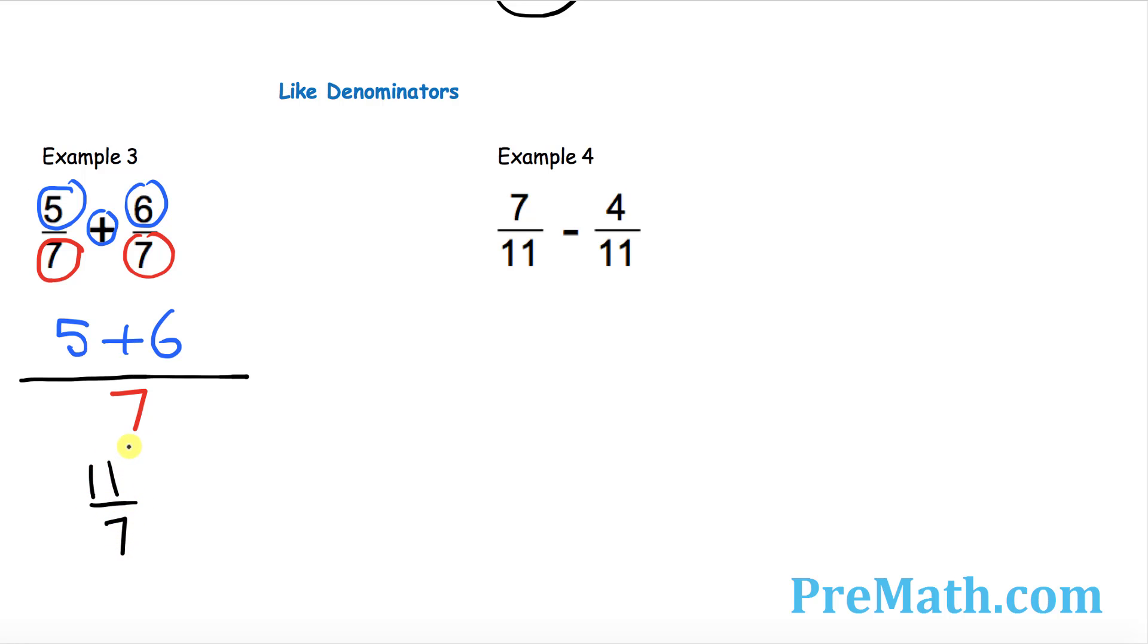So you use this method only when your denominators are the same, your bottom numbers are the same. Likewise, we're going to be doing example number four right now. So we're going to draw a big long fraction bar and then focus on its bottom numbers which are 11 and 11 once again, so put down 11 just once.